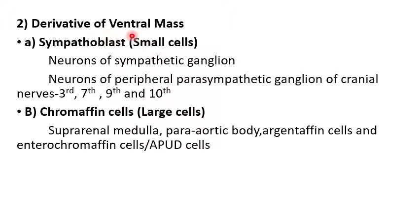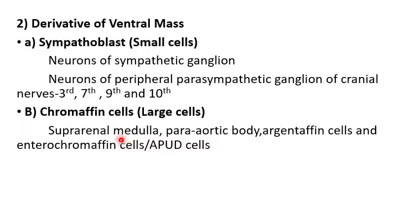Derivatives of the ventral mass: the ventral mass converts into sympathoblast cells (small cells) and chromaffin cells (large cells). From the sympathoblast cells we get neurons of the sympathetic ganglia and neurons of the peripheral parasympathetic ganglia of cranial nerves 3rd, 7th, 9th, and 10th. Chromaffin cells are large cells which develop into the suprarenal medulla (medullary part of the adrenal gland), para-aortic bodies, argentaffin cells, and enterochromaffin cells — also known as APUD cells.